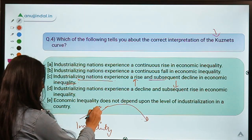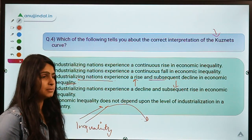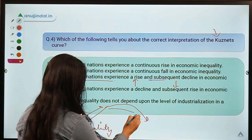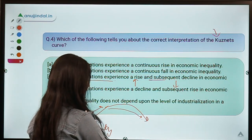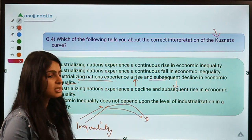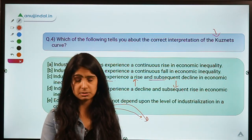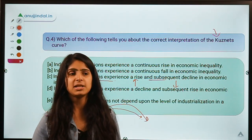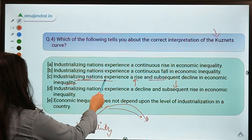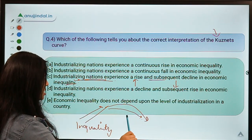Initially inequality rises, but as businesses grow, profits grow, unemployment vanishes, and employment rises. In that case inequality starts to fall and gradually moves toward a more equal society, because if businesses are making profit some of that profit gets transferred to employees and laborers. So at first industrializing nations experience a rise in inequality and then a subsequent decline.